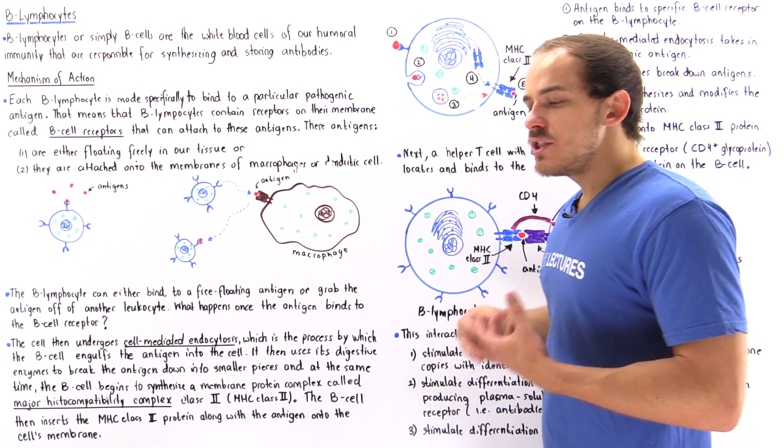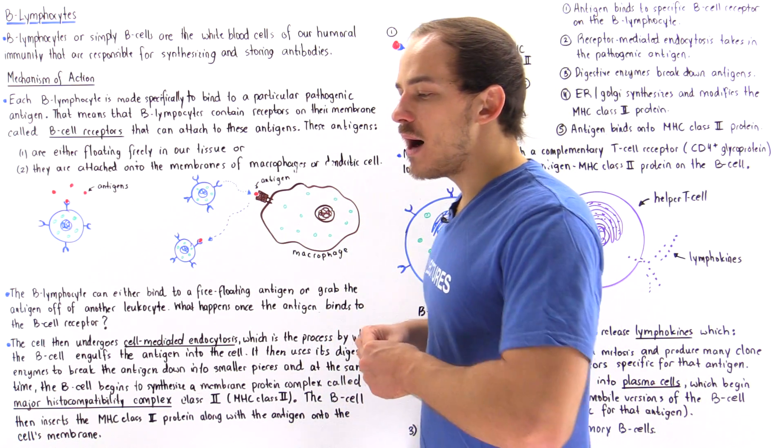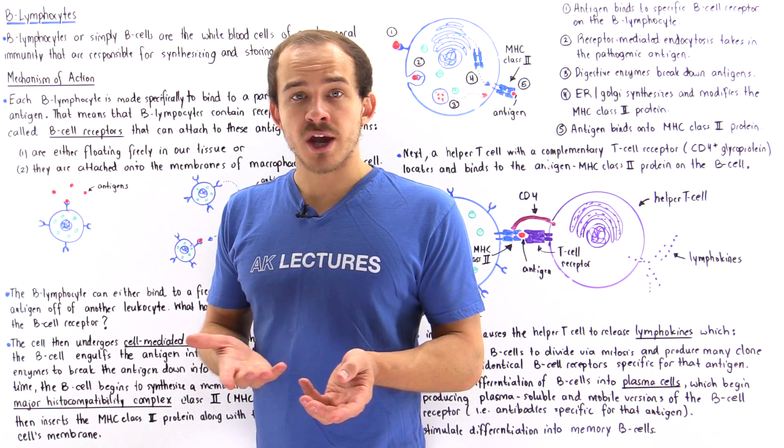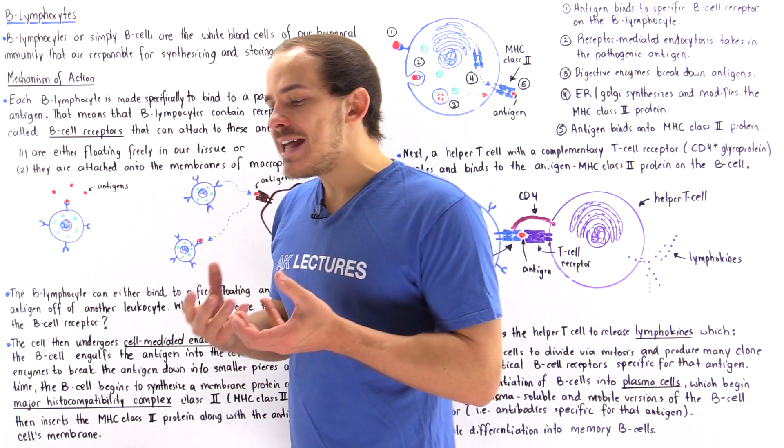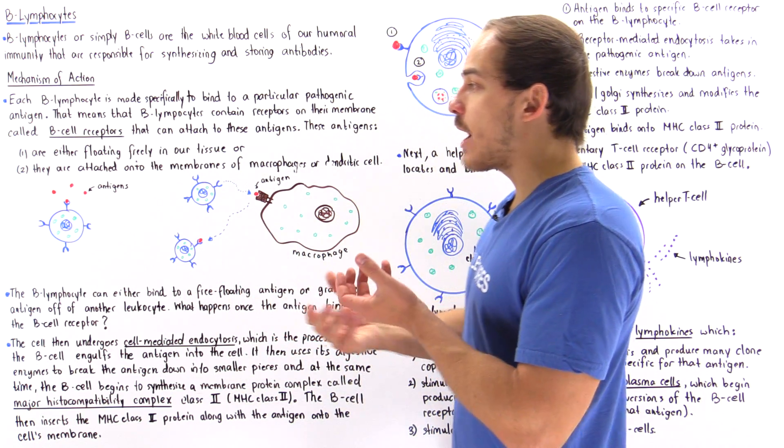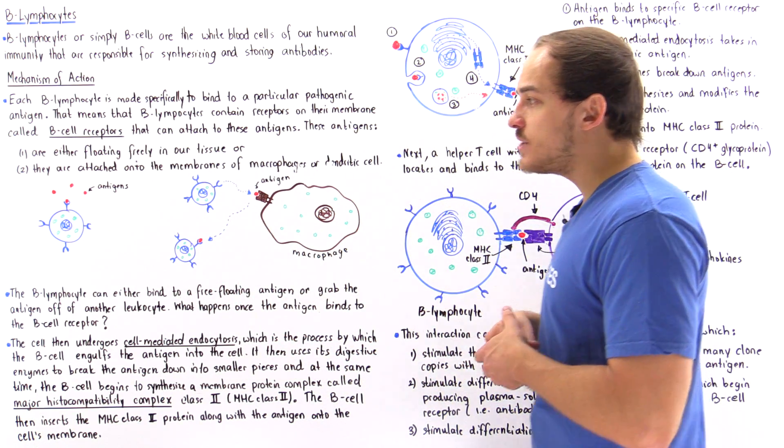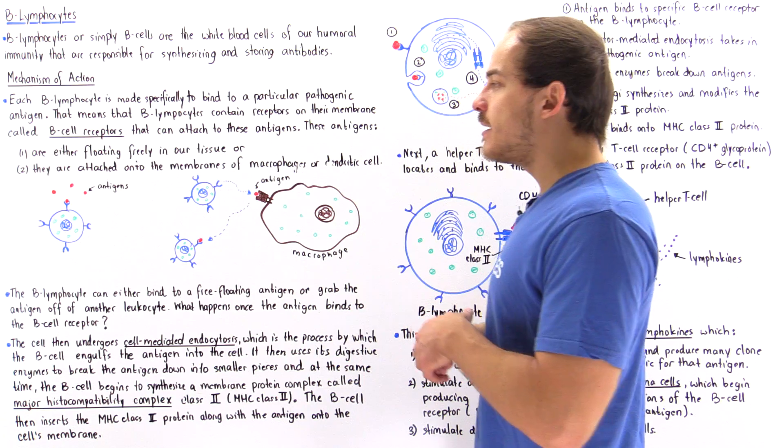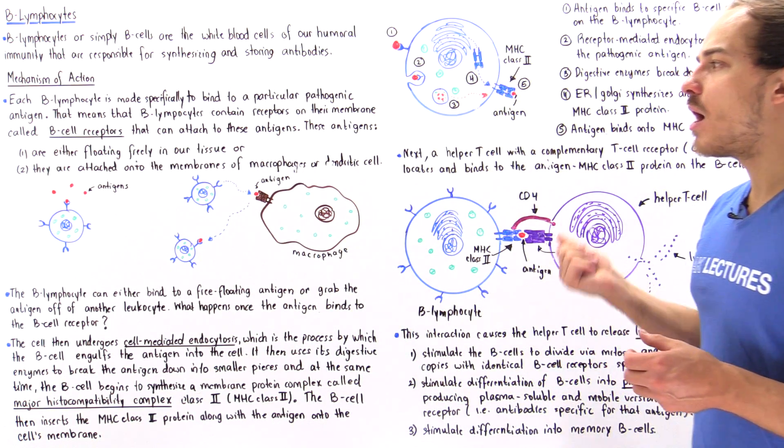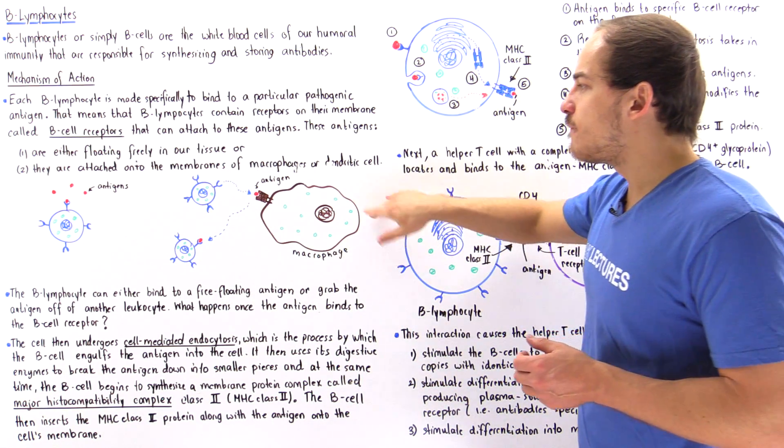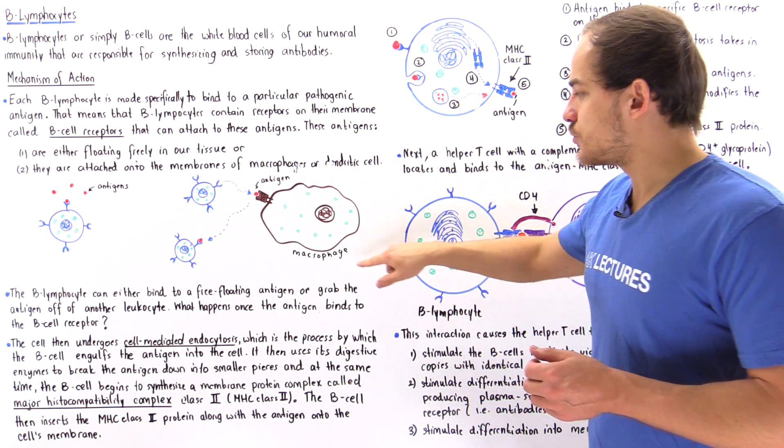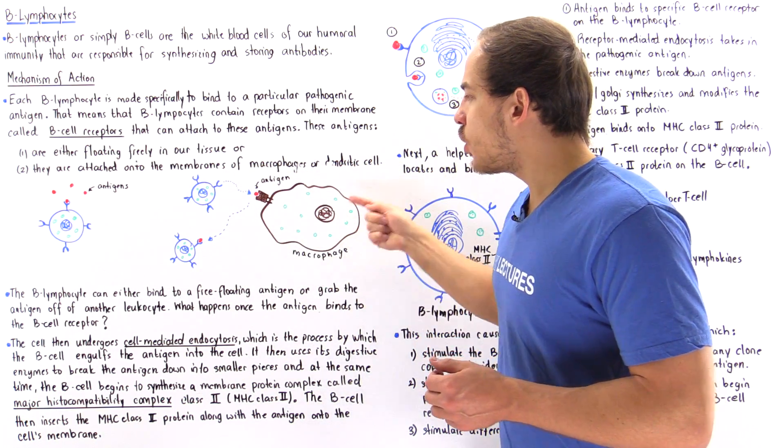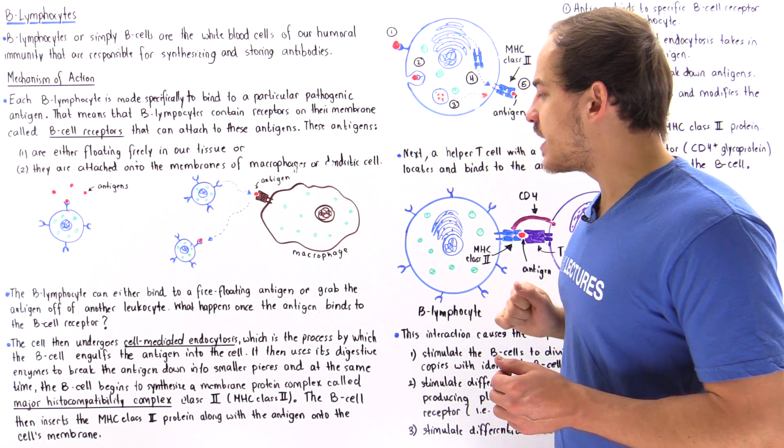Let's suppose we have a pathogen that makes its way into our body. That pathogen will release antigens. These antigens can either float around our blood, lymph, or tissue, or they can be picked up by some other type of white blood cell, for example, a dendritic cell or a macrophage.